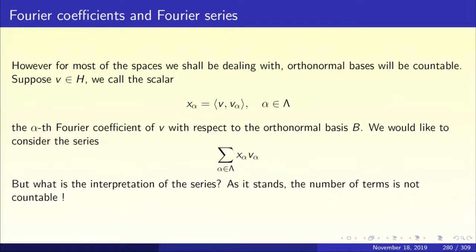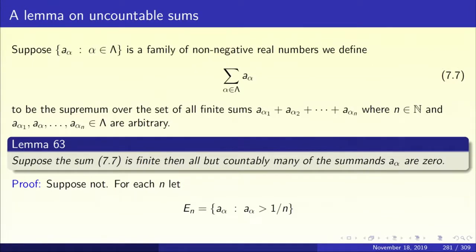We have the series sum of X_alpha V_alpha over alpha in lambda, but there is one small problem: the family V_alpha is not necessarily countable — it could be uncountable. So how do we make sense of a series sigma X_alpha V_alpha where the number of terms is uncountable? We shall take up this issue now. First we shall prove a lemma, a very general lemma in real analysis that has nothing to do with Hilbert spaces. Suppose you have an uncountable collection of non-negative real numbers and you form the sum (display 7.7). How do we assign a meaning to this uncountable sum?